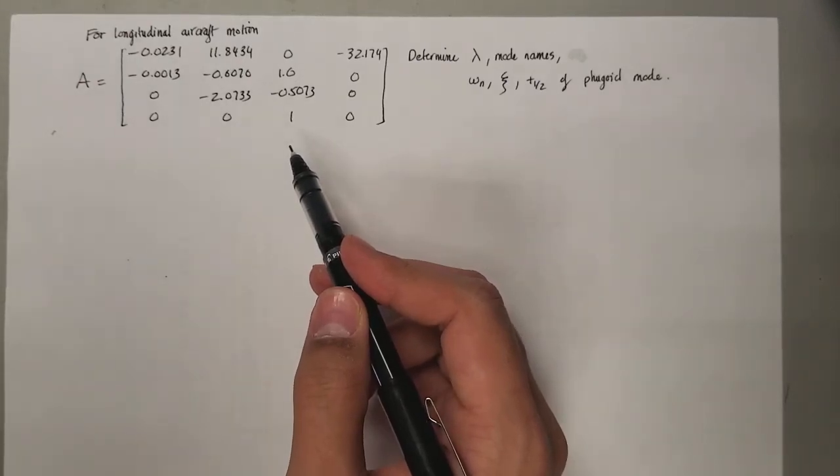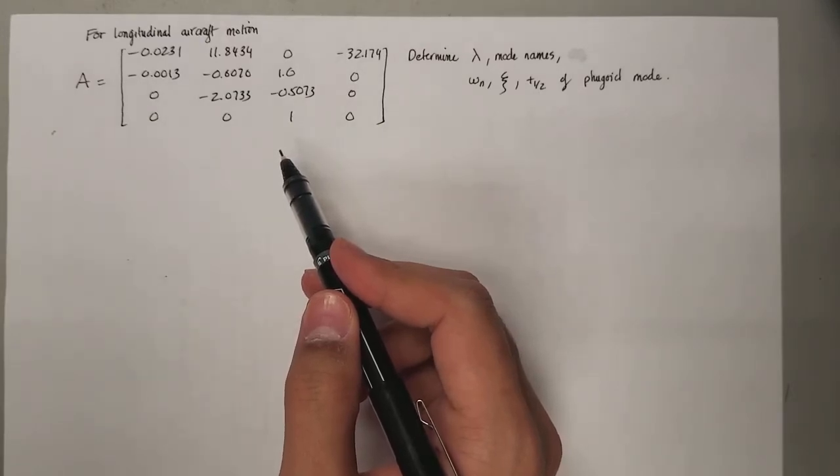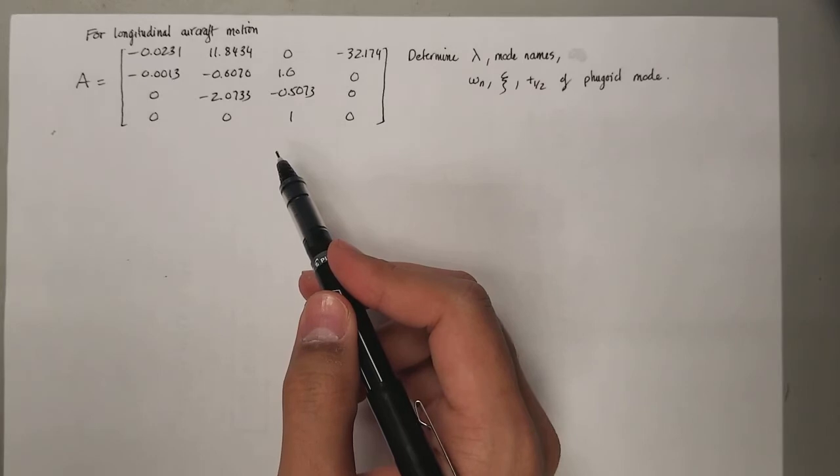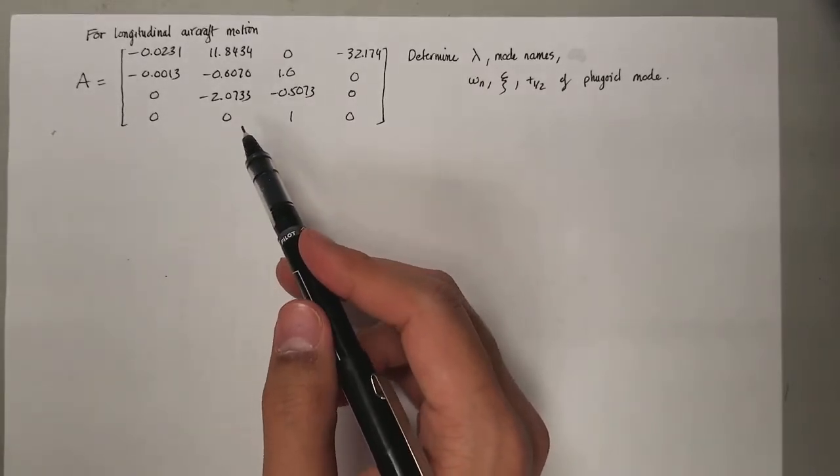Hey guys, welcome back. This week I'll be doing an example problem relating to the linear dynamic stability of an aircraft, and particularly we will be talking about different modes of aircraft motion.